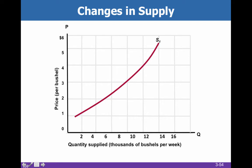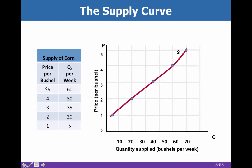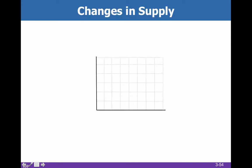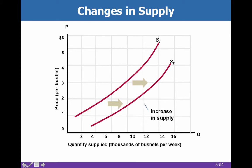Now what might cause a change in supply? Not a change in quantity supplied. The thing that causes a change in quantity supplied is a change in the price. So if we go from a price of $2 per bushel to $3 per bushel, then I'm going to supply more. That is movement along the existing supply curve — a change in quantity supplied, or Q sub S — as opposed to a change in supply.